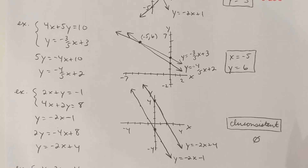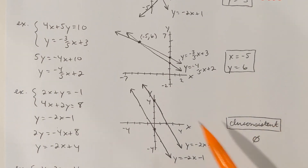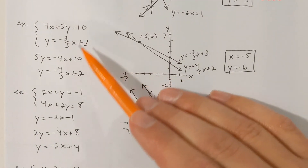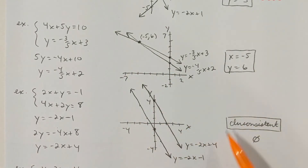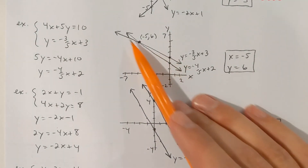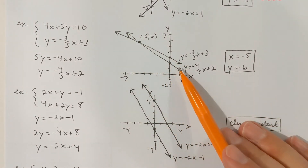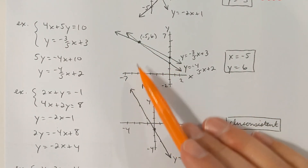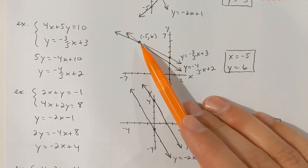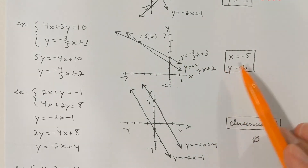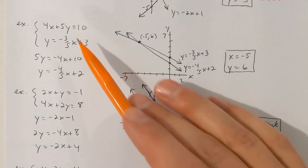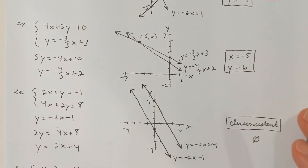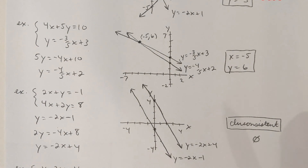Here's another example of a system using the graphing method. I've got two lines that intersect at the point (negative 5, 6). So x would be negative 5 and y would be 6. You could verify that one.